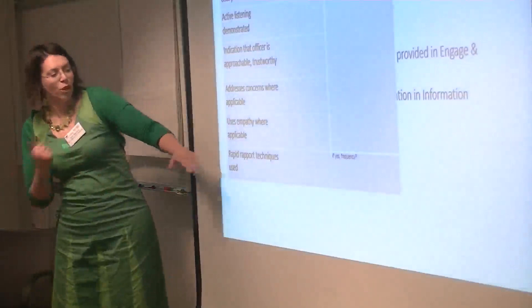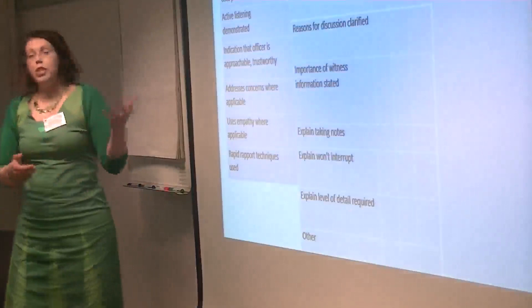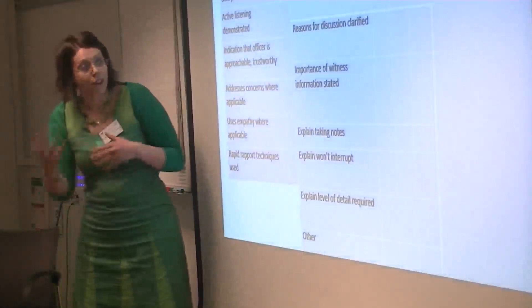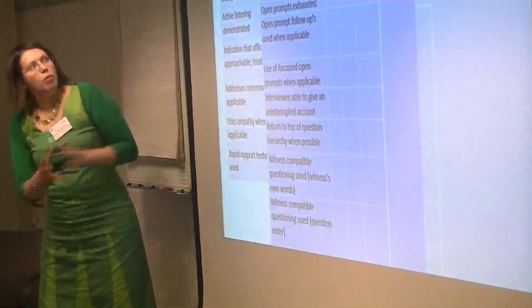But as we move down the list, the questions and categories become more subjective. So rapport techniques used or using empathy. How do you code for empathy? This could be very subjective. Another one, explanation, whether the explanation of the whole procedure was provided or not. Some of the categories are pretty straightforward, so providing reasons for disclosure is clarified or the explanation for taking notes is provided. But then for instance one of the other tables that they filled in was on different questions and different types of questions and functions of questions. And this is where it really gets tricky.